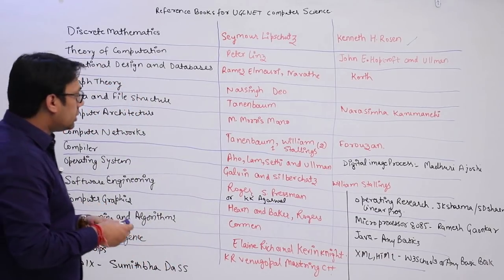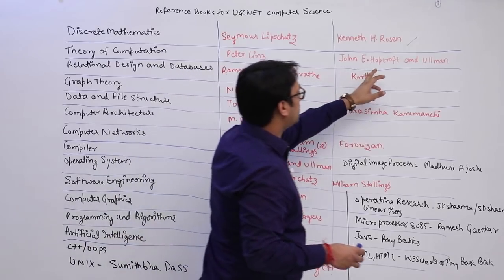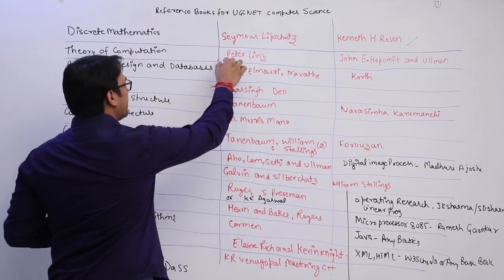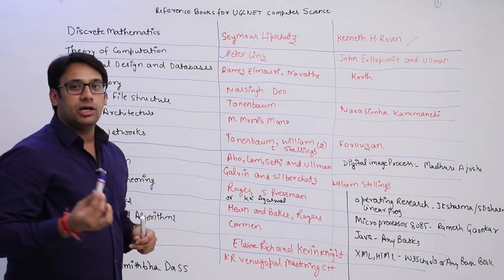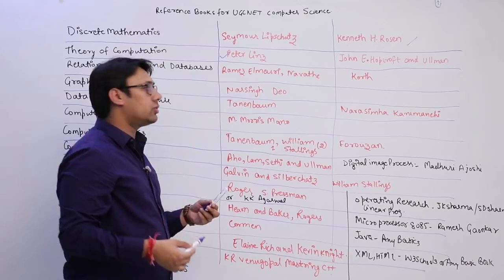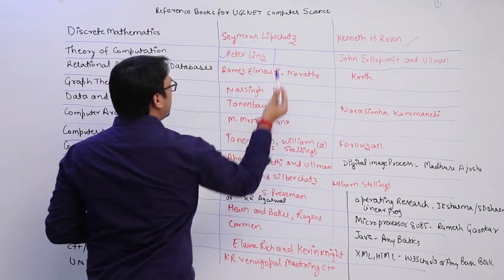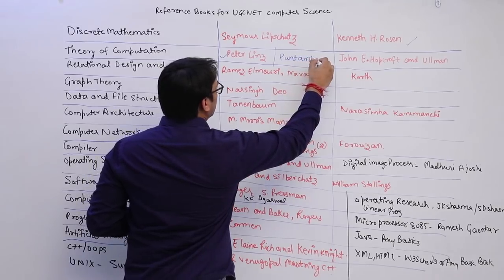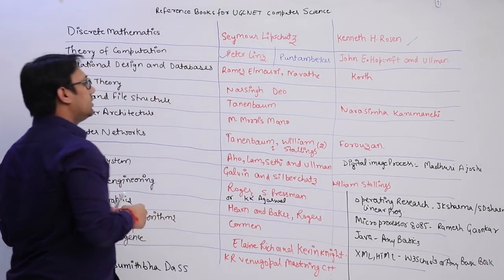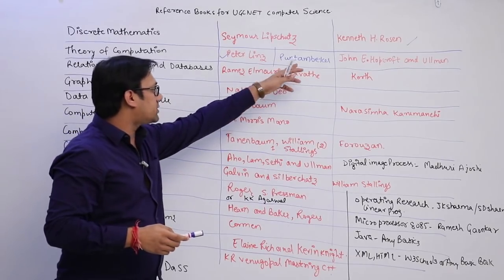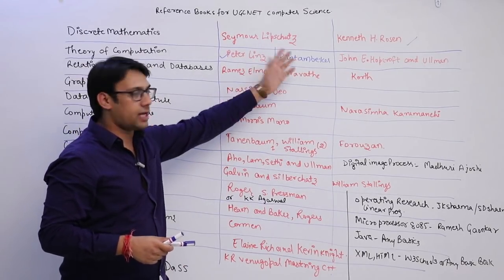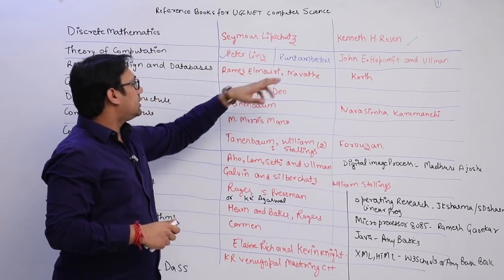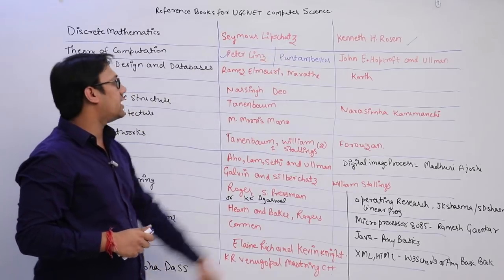For Theory of Computation, we have two books: Peter Linz and Ullman. Personally I feel Peter Linz is a better book. If you want a local author book, I referred multiple local author books and found one called Puntambekar — this book is very easy to understand and is available on Amazon. It is a local author book but a very good one for easy understanding of concepts.